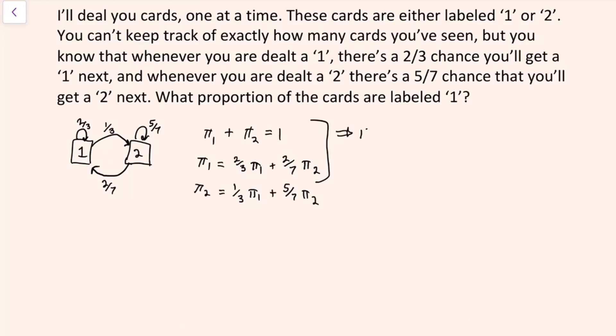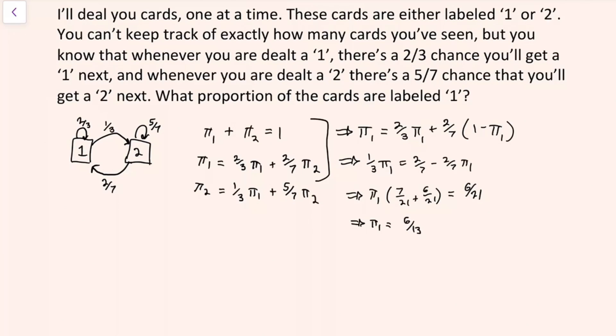This implies that the proportion of cards labeled one is two-thirds times the proportion of cards labeled one, those are the ones that stay here, plus two-sevenths. And now I'm taking advantage of that first equation to fill in one minus the proportion of cards that are labeled one, in place of the proportion that are labeled two. And then from here we do some algebra. You can find that out of this deck the proportion of cards that are labeled one are six-thirteenths.